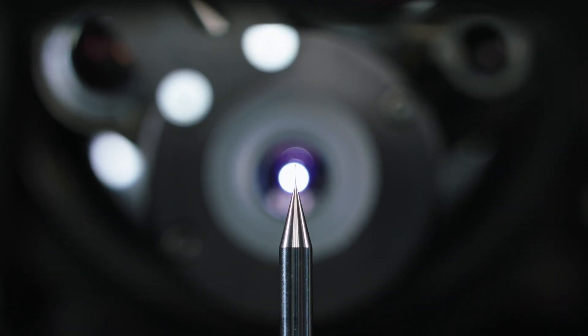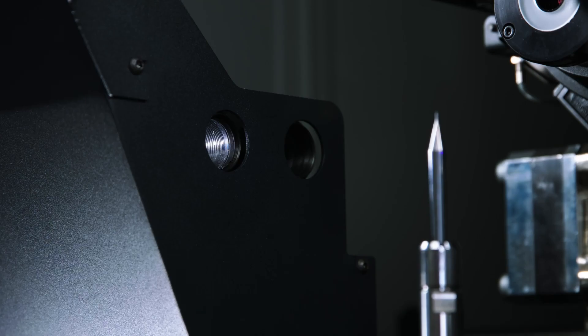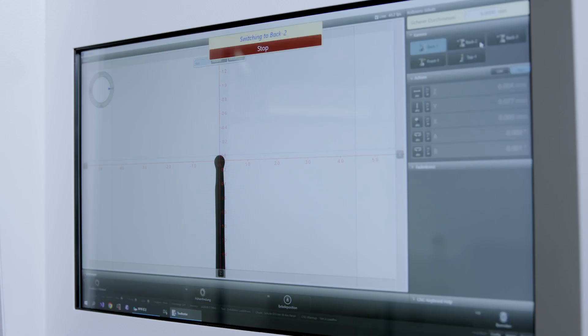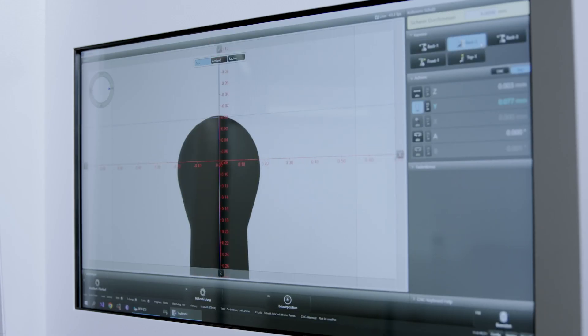This is made possible on the one hand by a second backlight camera with 400 times magnification, which can capture a sufficient number of measuring points even for such extremely small contours in order to reliably measure even minimal contours.